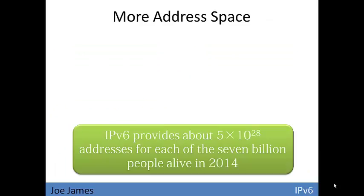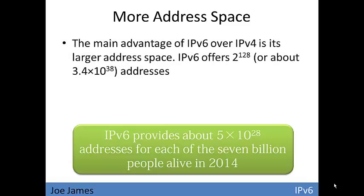IP version 6 provides about 5 times 10 to the 28th addresses for each of the 7 billion people on the planet. So that's a lot of addresses, and that's the biggest advantage of IP version 6 — the vast amount of address space that it offers.